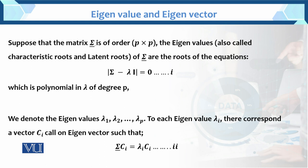Let's begin with any matrix. Suppose the matrix Σ is of order p×p. Now here is equation 1: |Σ - λI| = 0, which is a polynomial of order p. This equation has p roots.